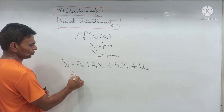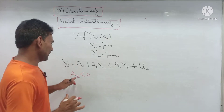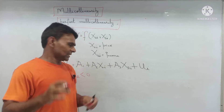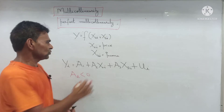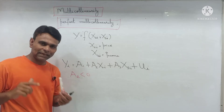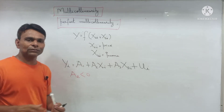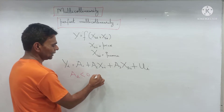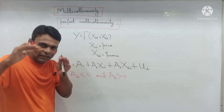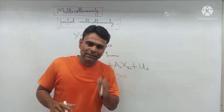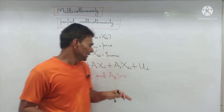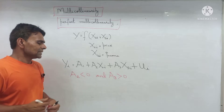Suppose a2 is less than zero — what does this imply? a2 is the slope of price X2i. There is an inverse, that is a negative relationship between price and quantity demanded, that is why a2 is less than zero. Now a3 is greater than zero, because the relationship between income of the consumer and quantity demanded is positive, that is why a3 is greater than zero.